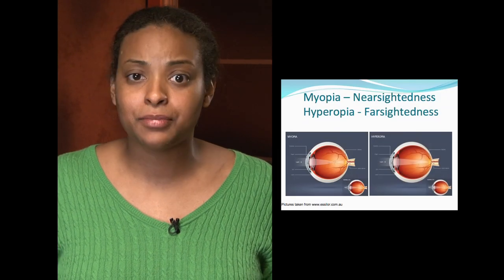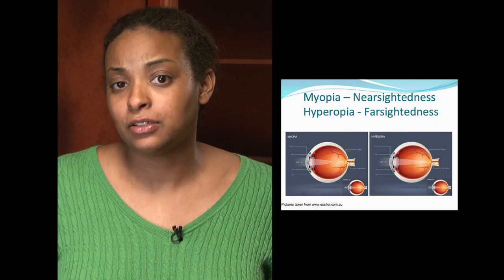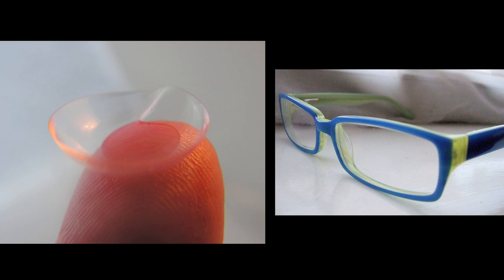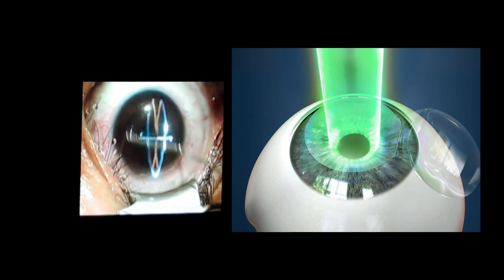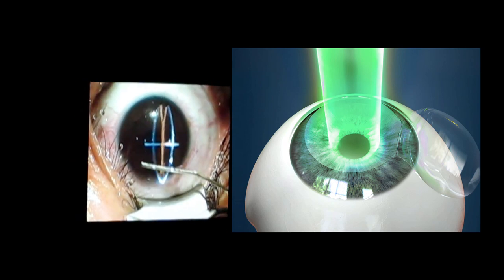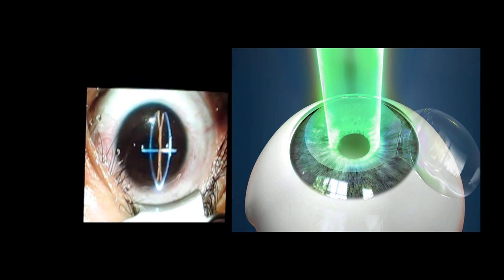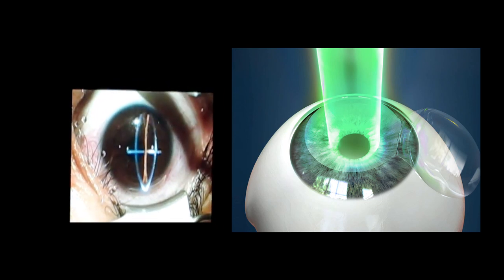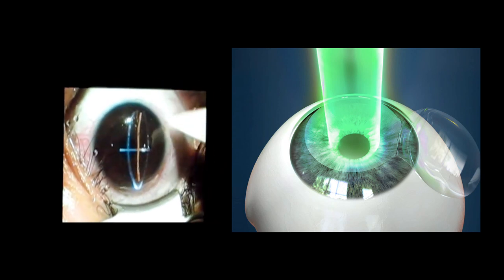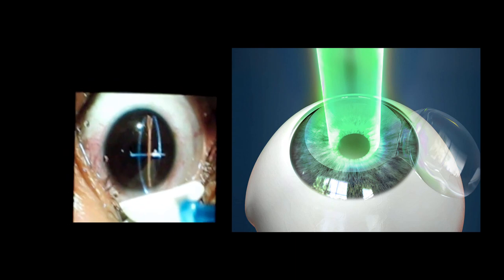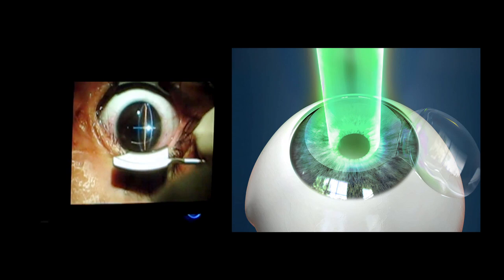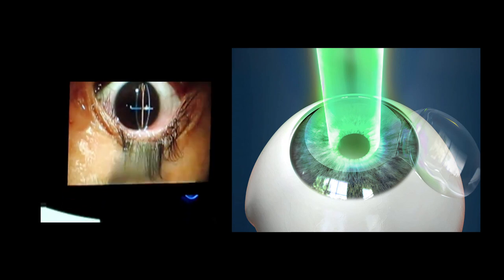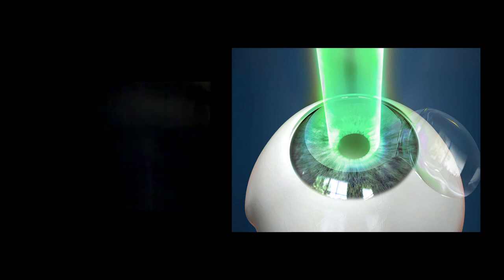These refractive errors can be corrected using contact lenses or glasses. Have you heard of LASIK surgery? LASIK uses a UV laser to change the overall shape of the cornea. The process involves creating a corneal flap using a small knife called a micro knife. The flap is folded back and the laser beam then reshapes the cornea. The laser can remove tens of millimeters of corneal tissue and is extremely precise.